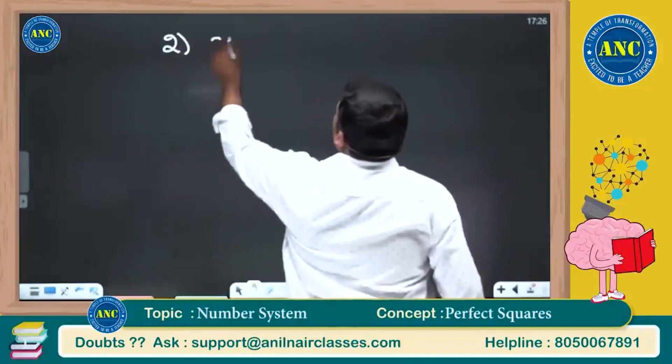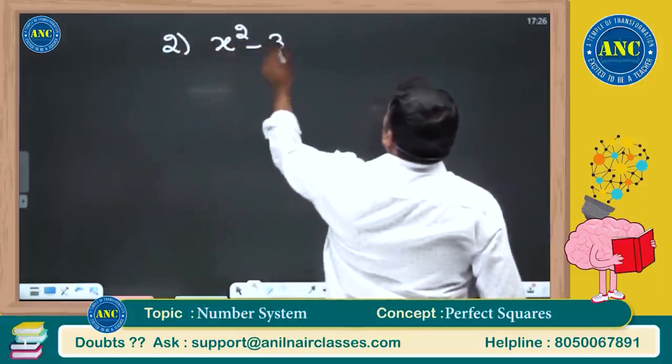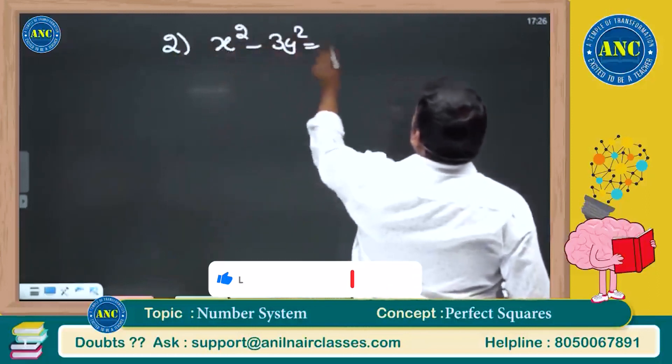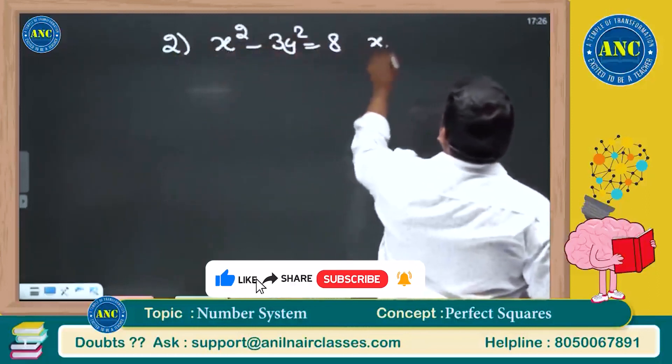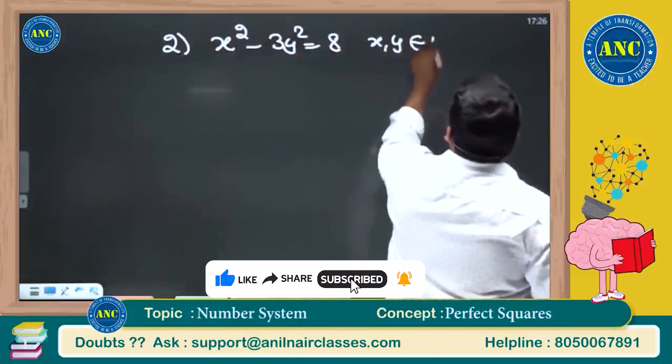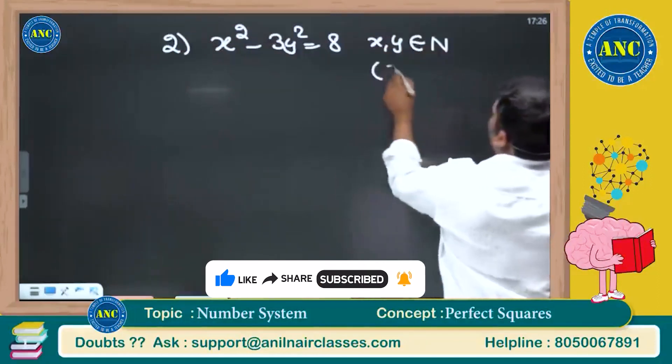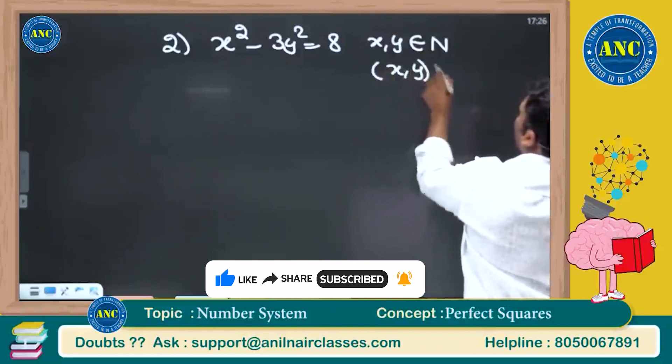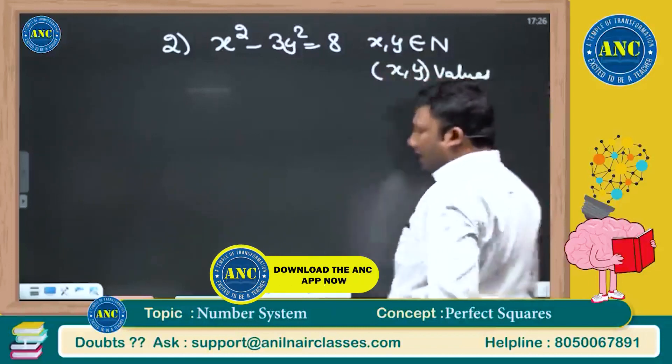The question is x square minus 3y square equivalent to 8. This is how I prepare the mock questions. x, y are natural numbers. How many values x, y will take?